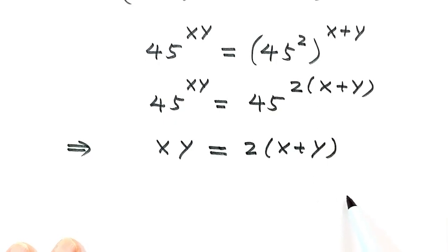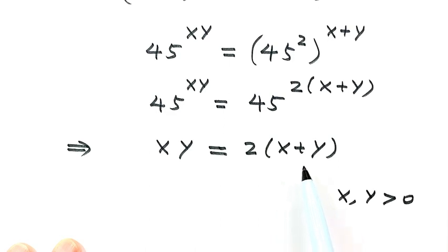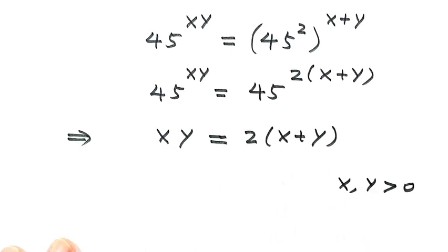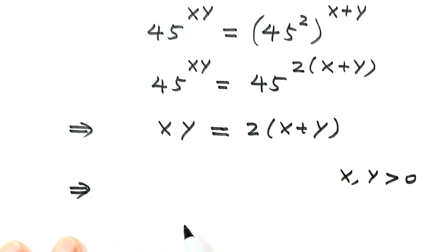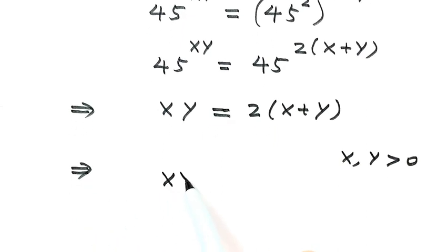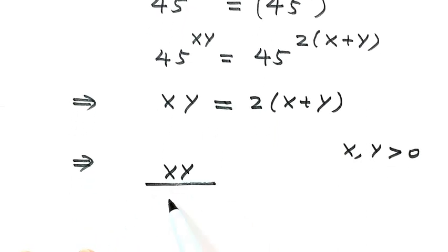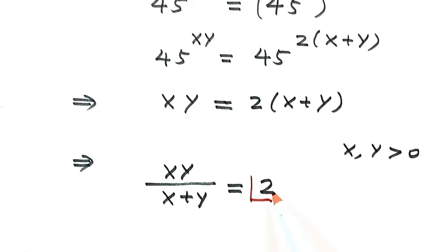Because we have x and y are bigger than 0, that means x plus y won't be 0. So dividing both sides by x plus y, we have x times y divided by x plus y equals 2. So 2 is the answer for this question. Thanks for watching.